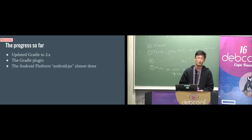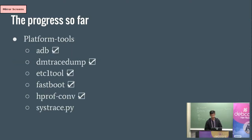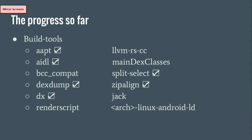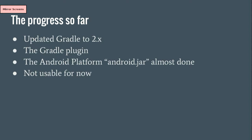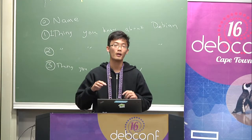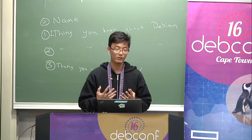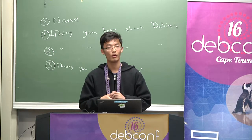Android.jar is almost done. As I said, Android SDK has three components: platform tools, SDK tools, and build tools. We have packaged most of the platform tools, and we have packaged some of the build tools, but we haven't dealt with any SDK tools yet — we will do that later. Overall this SDK is not usable for now. We have been testing using this SDK to build minimalist Gradle Android apps, and it just has errors. So it's not usable for now, but we are making progress.